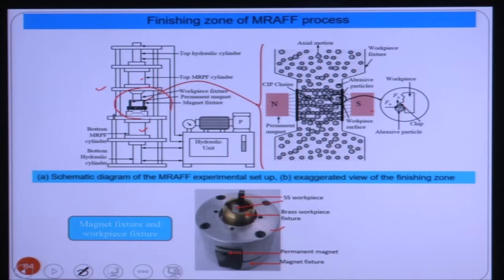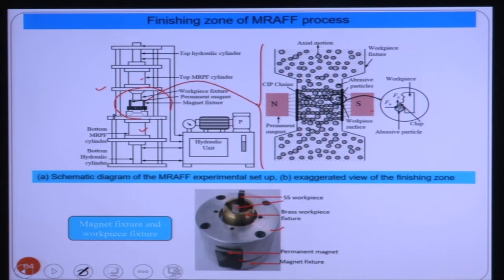You can see the workpiece fixture, which also serves as the magnet fixture. Permanent magnets are placed at the cylindrical external surface of the magnet fixture. These magnets are neodymium iron boron (NdFeB), simply called N-grade. We have considered two types: N17 and N48 grades of magnets.